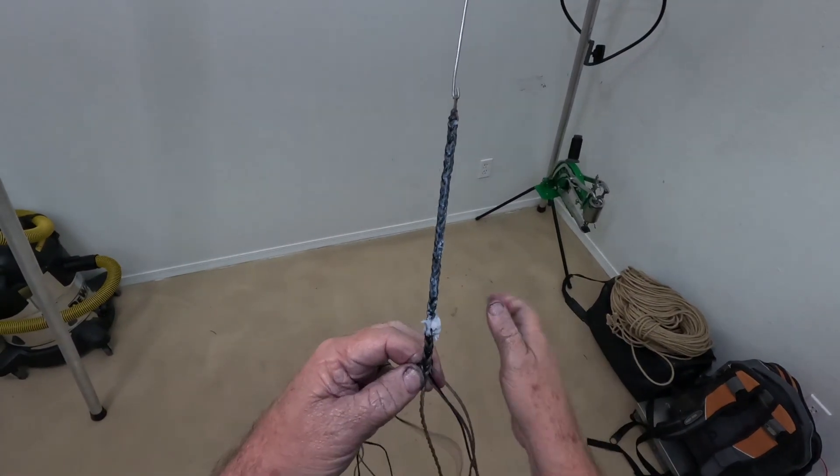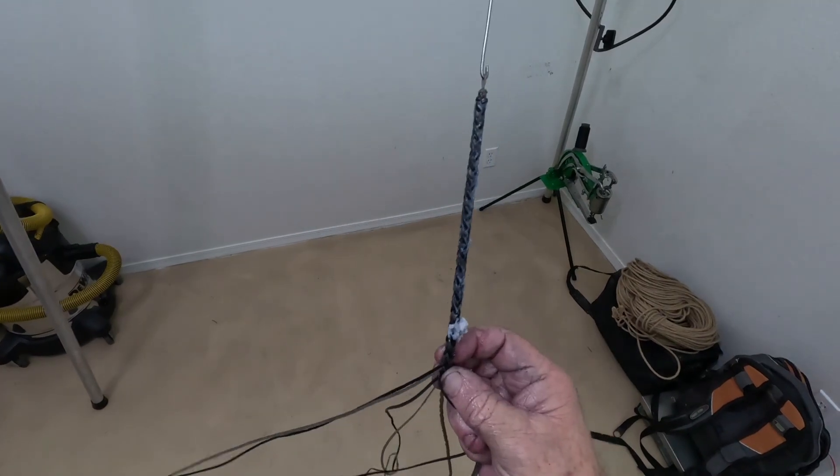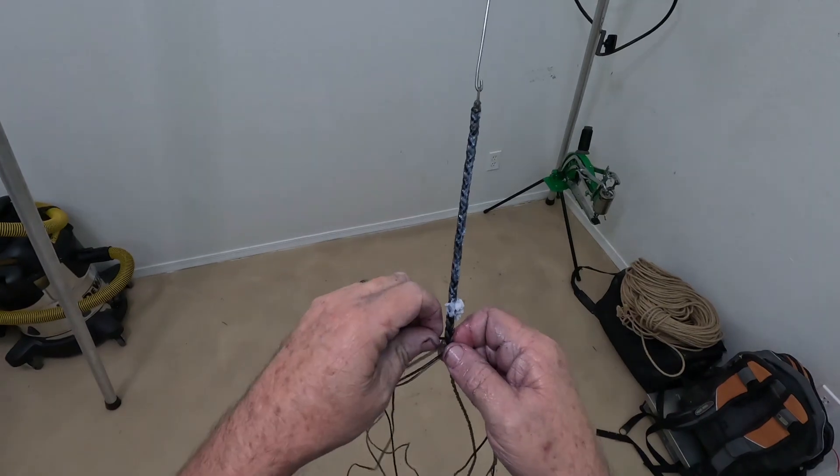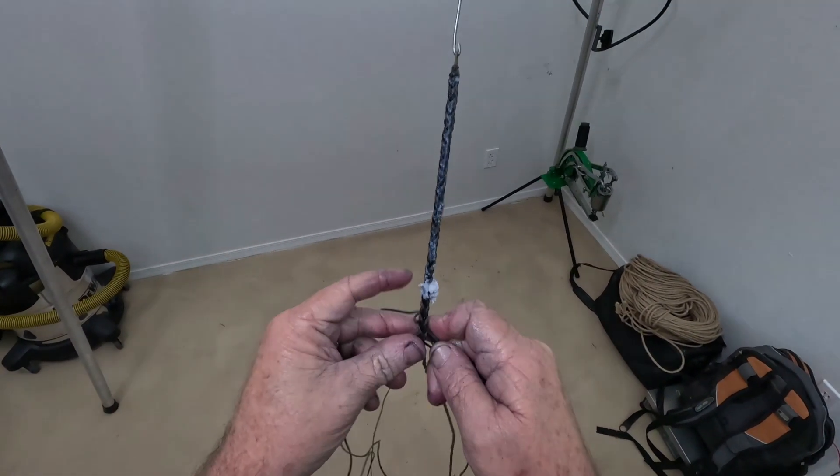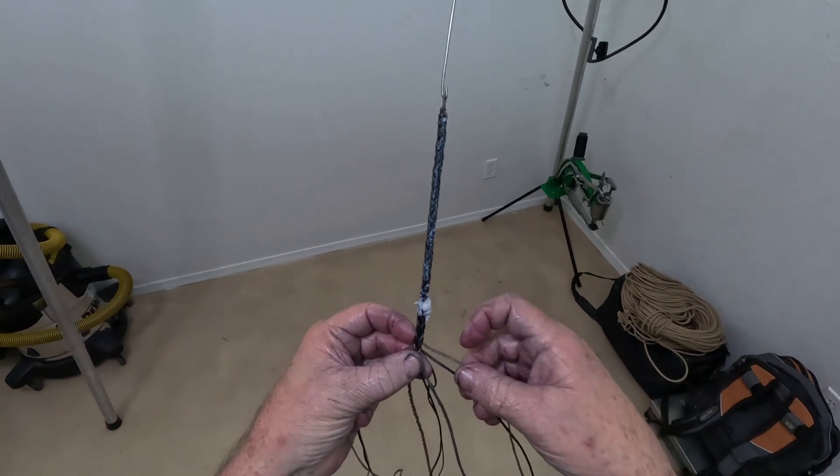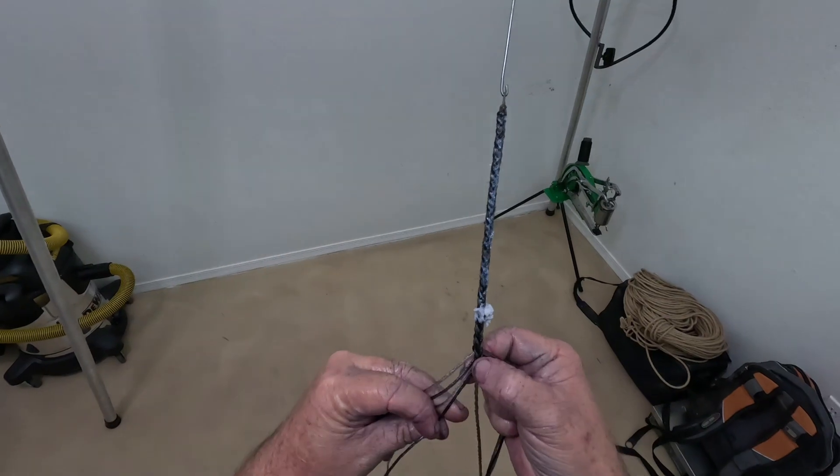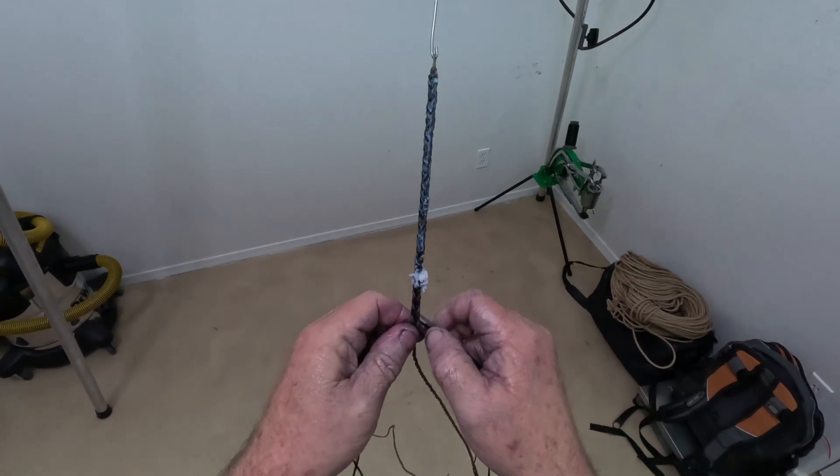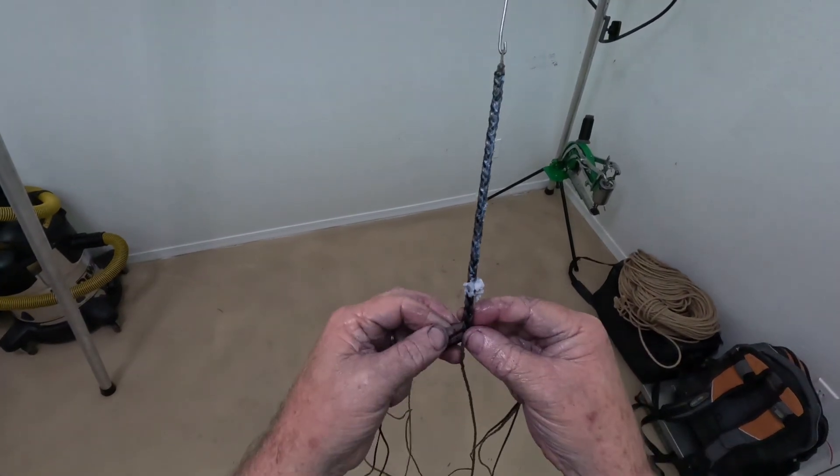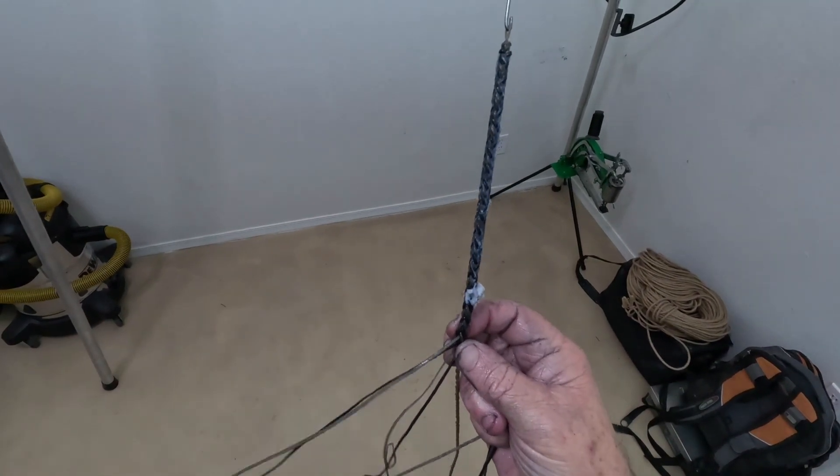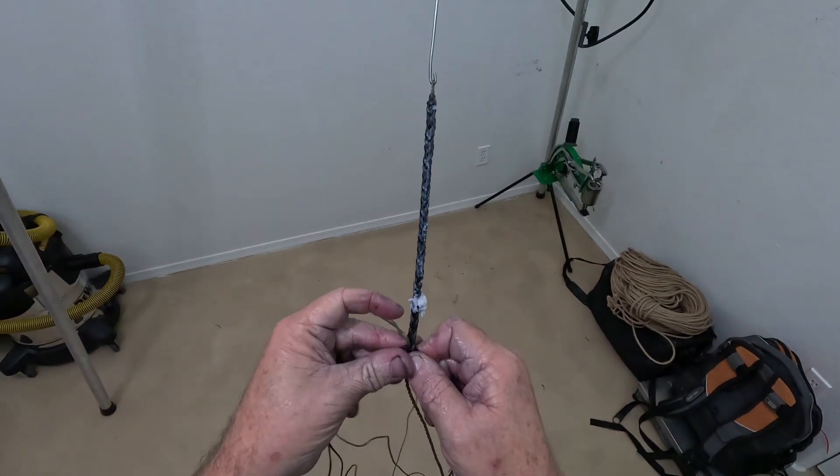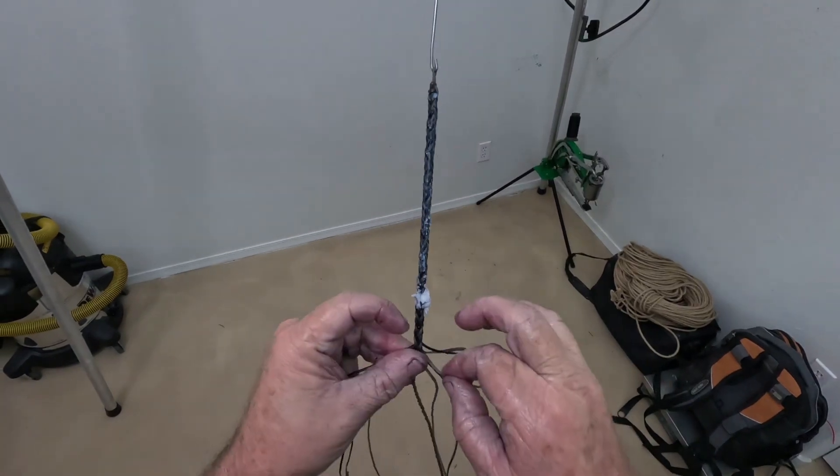Again, I don't recommend plaiting rawhide barehanded, but I can't see the skin surface very well and I can feel it in my fingers. It's easier for me to keep it straight. I end up with paper cuts even though this is really well trimmed up rawhide. The bottom side gets sharp.